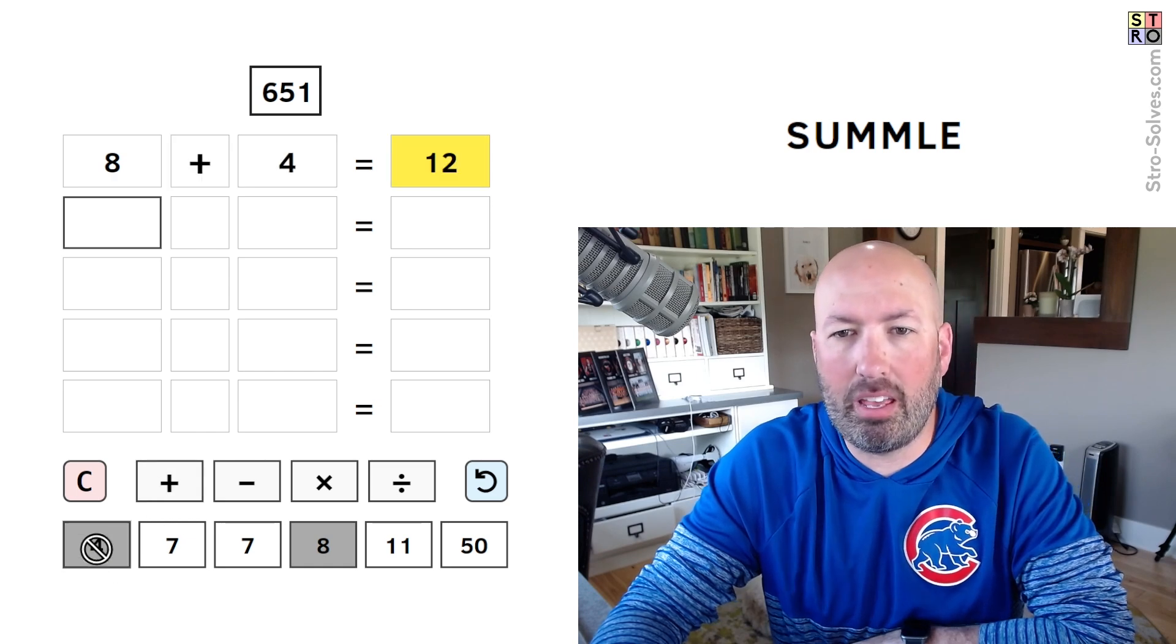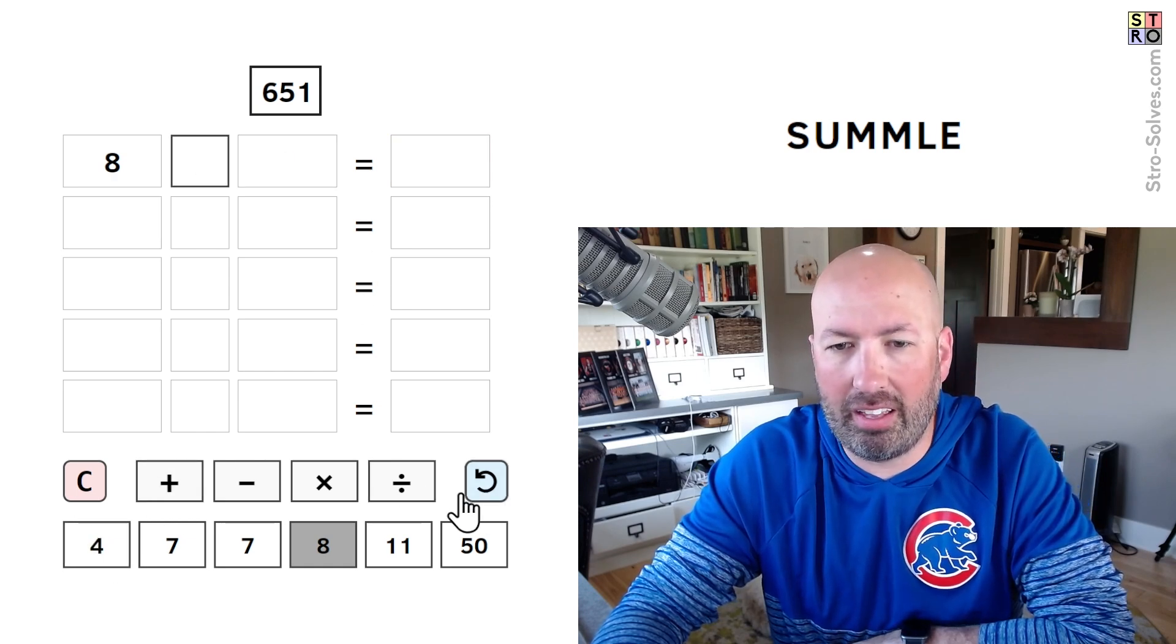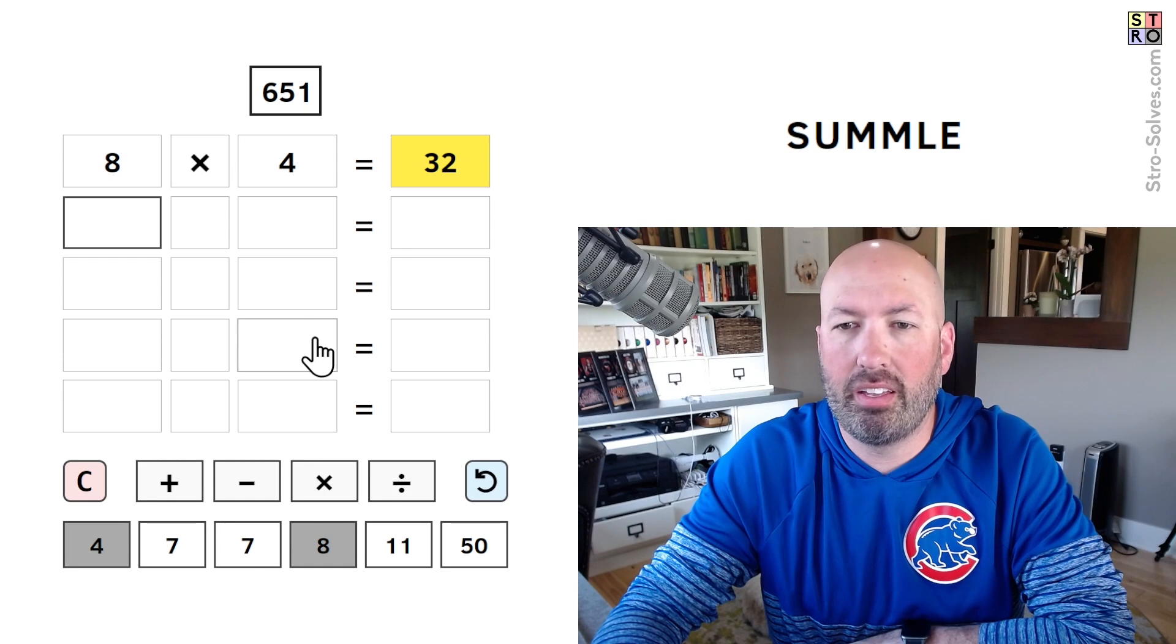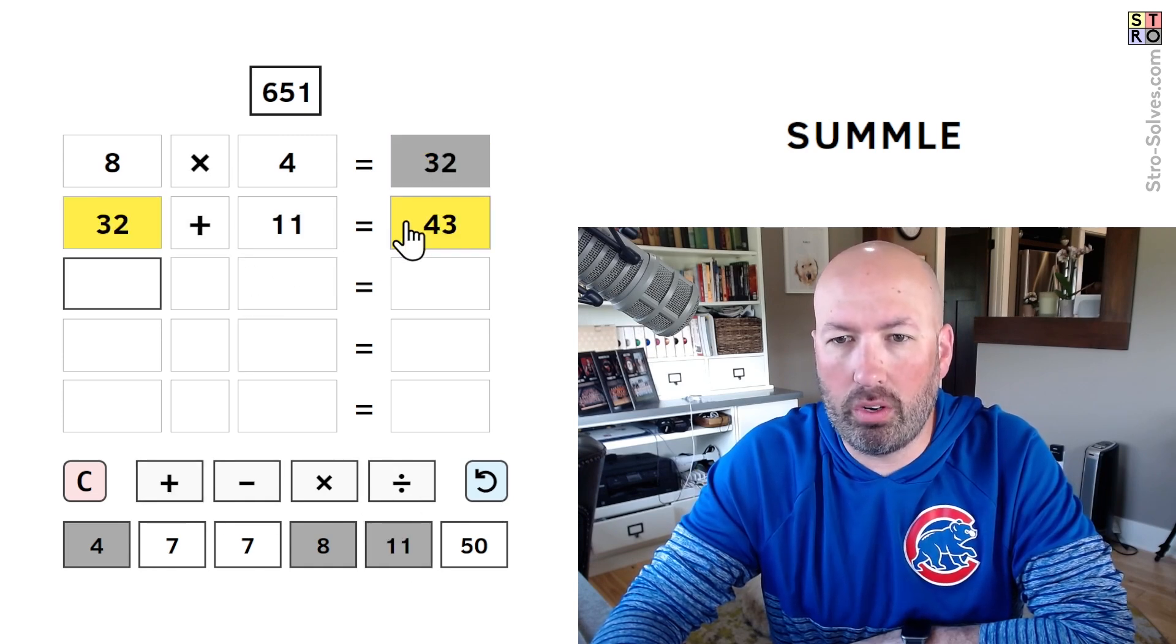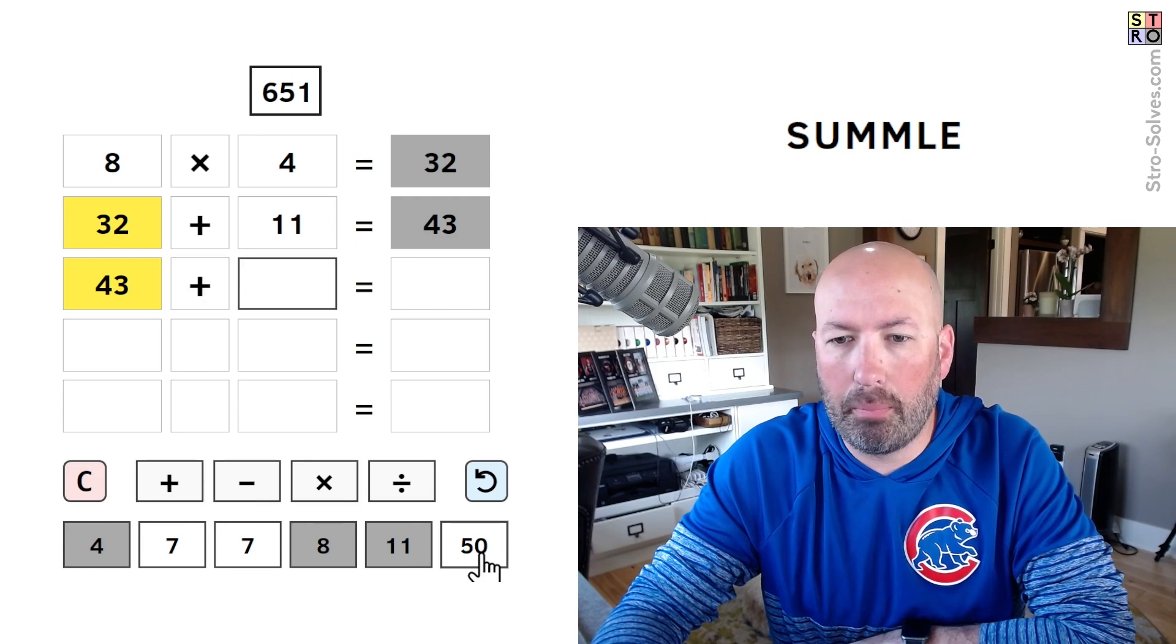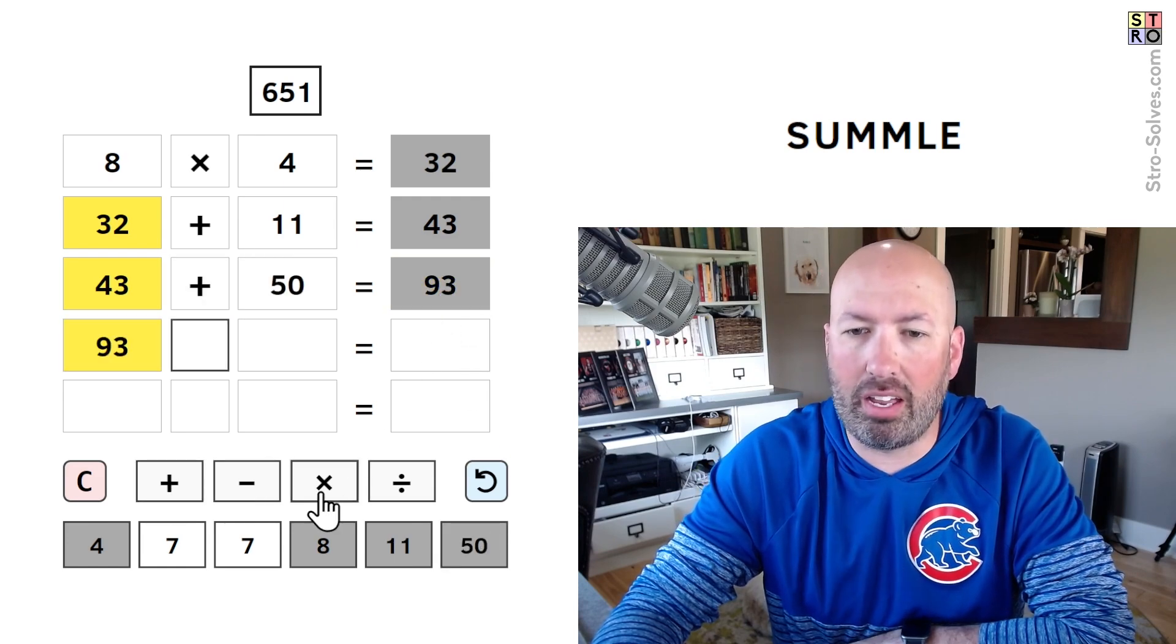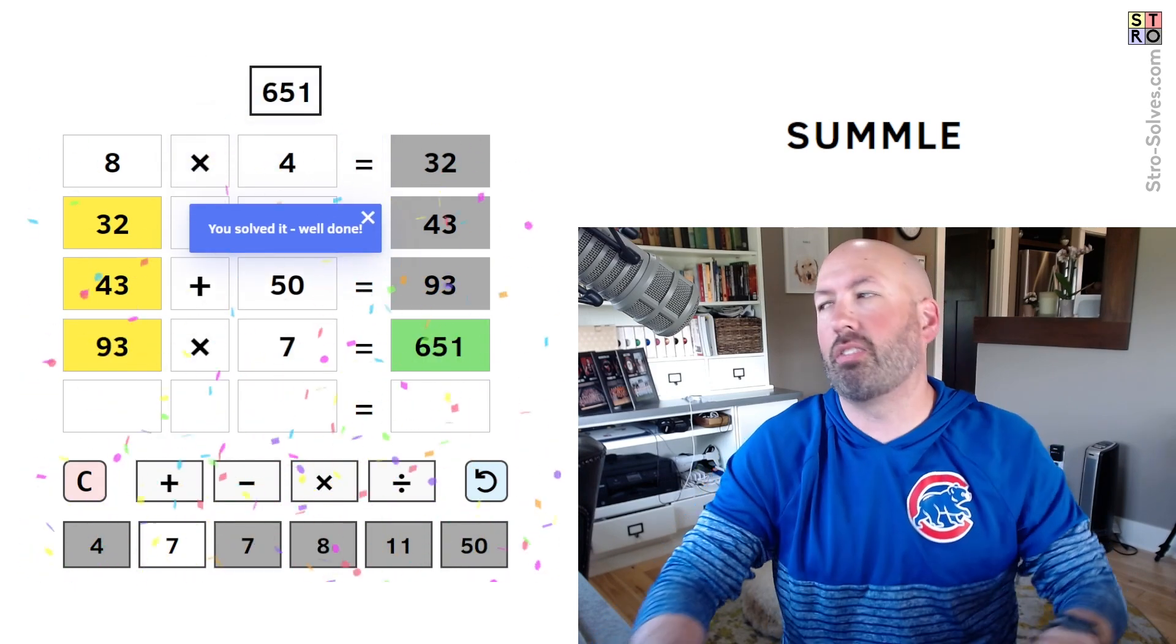It's 8 times 4 is 32. 32 plus 11 is 43. 43 plus 50 is 93, and 93 times 7 is 651.